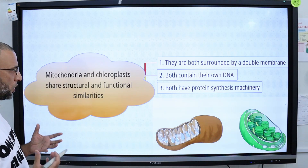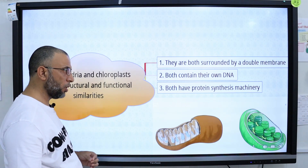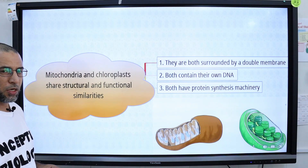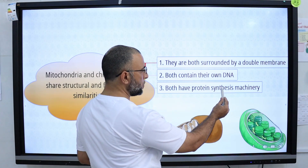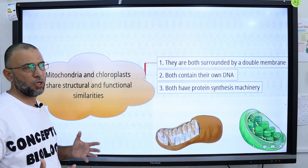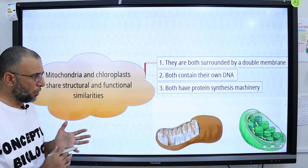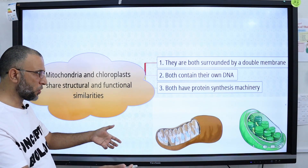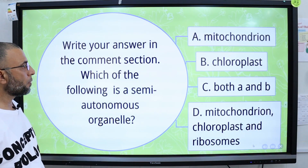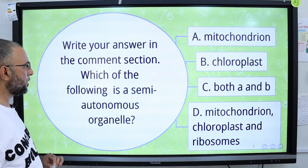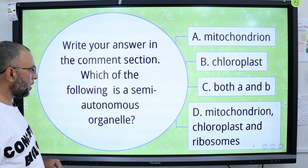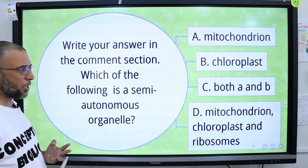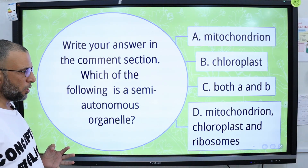Mitochondria and chloroplasts share structural and functional similarities. First, both are bounded by two membranes. Second, they have their own DNA and their own protein synthesis machinery — whereas in eukaryotic cells, protein synthesis machinery is present in the cytoplasm, mitochondria and chloroplasts have their own. Question: Which of the following is a semi-autonomous organelle? A) Mitochondrion, B) Chloroplasts, C) Both A and B, D) Mitochondrion, chloroplasts, and ribosomes. Please write your answer in the comment section.